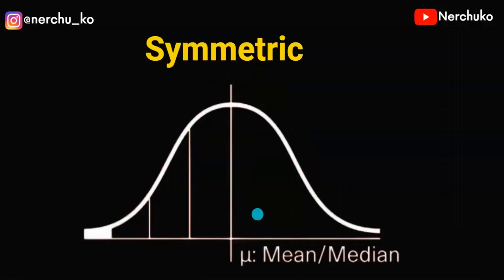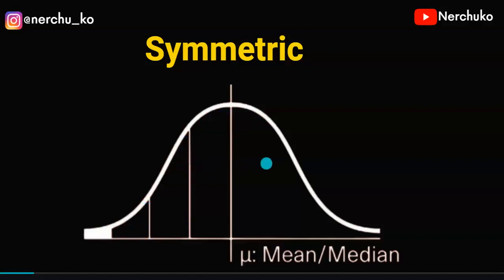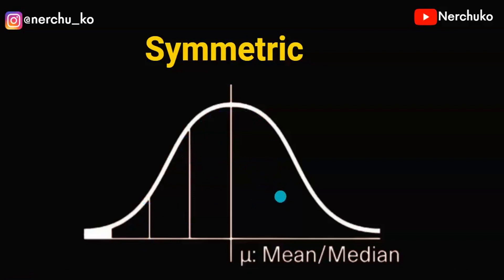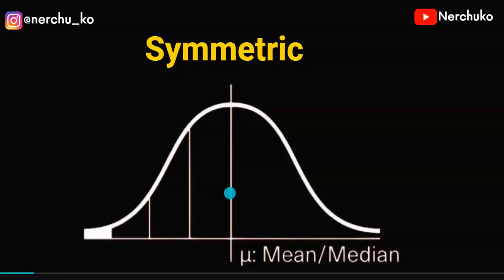If we have the bell curve, it is symmetric. For example, with 100 observations in a data set that follows Gaussian distribution, we have 50 observations on the left side of the mean and 50 observations on the right side. In the same way, the mean value, mode value, and median value are all equal — that is symmetric data.